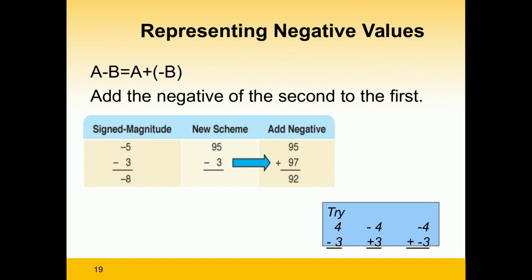How do we do subtraction? Subtraction is actually an addition of the negative of the number — A minus B is equivalent to A plus minus B. So in a subtraction, you add the negative of the second number to the first. For example, minus 5 minus 3: minus 5 in the new scheme is 95, and minus 3 in the new scheme is 97. Adding 95 and 97 gives 192; you discard the carryover to get 92. In the new scheme, 92 is equivalent to minus 8 — and indeed, minus 5 minus 3 is minus 8.